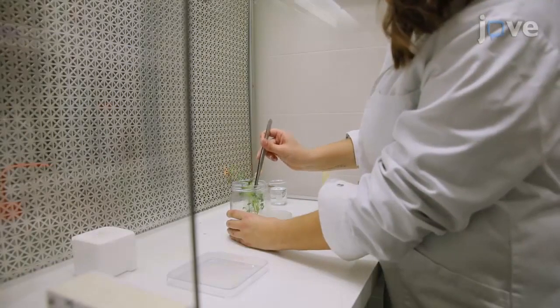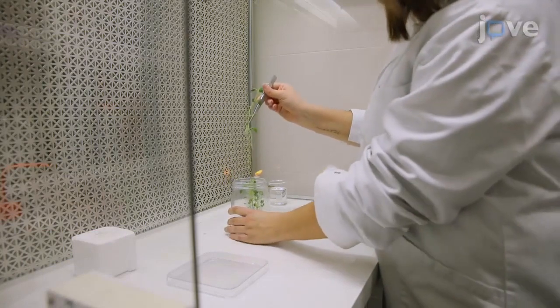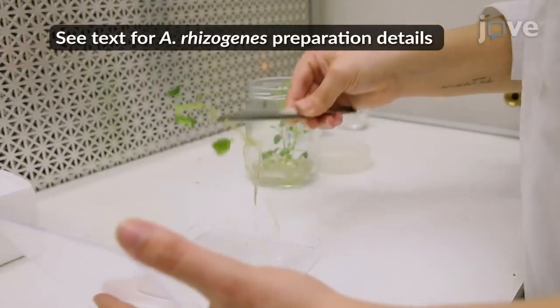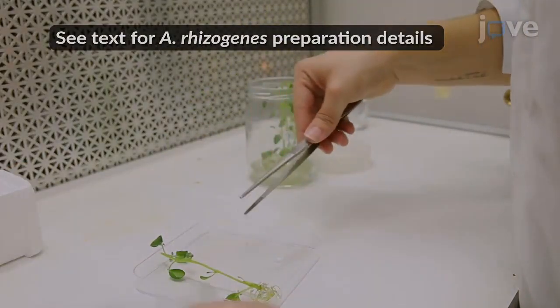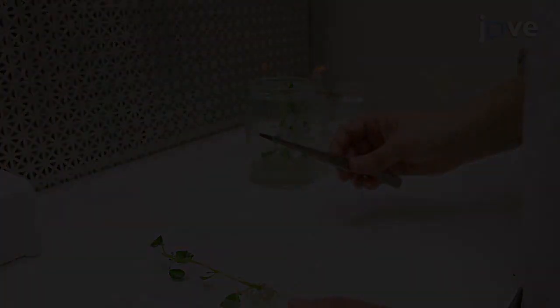For plant transformation using A. rhizogenes, carefully transfer a donor plant from a 2-MS medium culture to a 120 by 120 by 120 millimeter container.